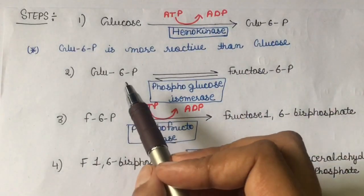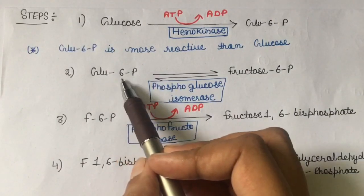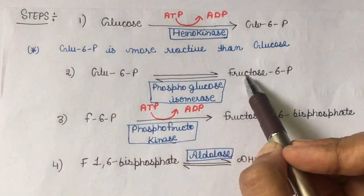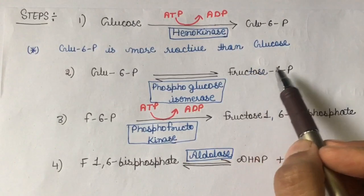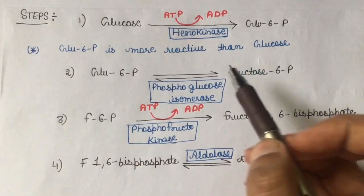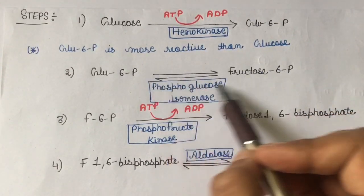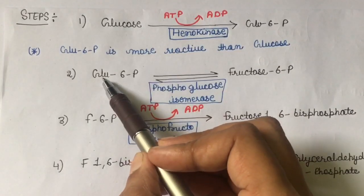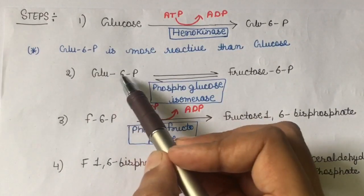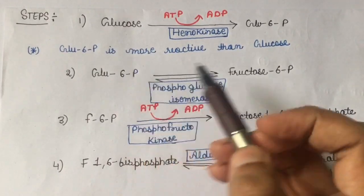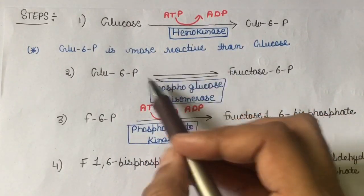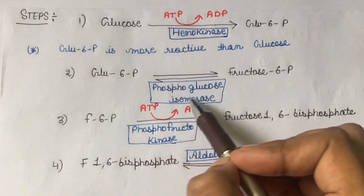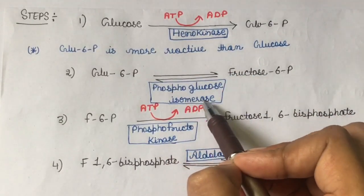In the second step, glucose-6-phosphate gets converted into fructose-6-phosphate. These are basically isomers — fructose-6-phosphate is the isomer of glucose-6-phosphate. The enzyme which helps in this process is phosphoglucose isomerase.